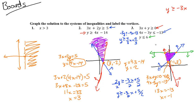For the red and green intersection: we use 3x + y = 0 and y = 6. Substituting y = 6: 3x + 6 = 0, so 3x = -6, x = -2. That vertex is (-2, 6).